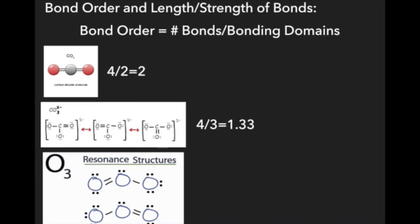What if instead you have a resonance situation with just a double bond and a single bond? You have three bonds total in two bonding domains — remember, you don't include the non-bonding pair as a bonding domain. So your bond order is going to be 1.5.